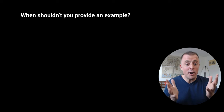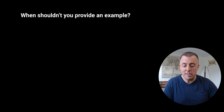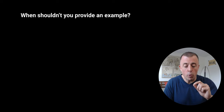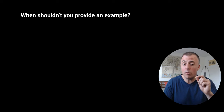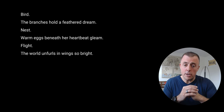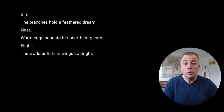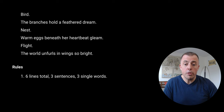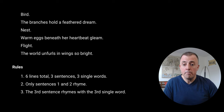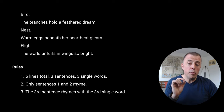Let's jump into some examples. The first example is going to be for a highly specific task or unfamiliar concepts or requests provided to the model. Here we have a brand new poem structure with some rules. Rule number one: six lines total, three sentences, three single words. Lines one and two rhyme. The third sentence rhymes with the third single word. We want to create a new poem using this structure and these rules.